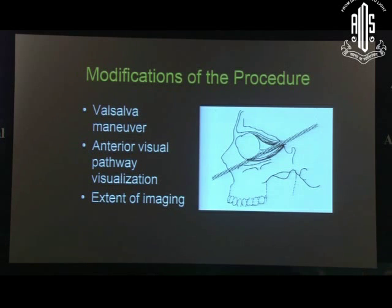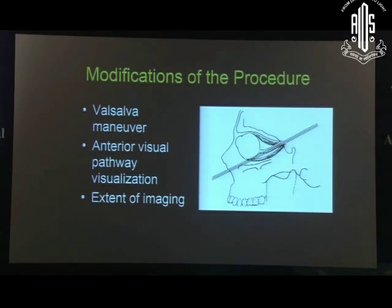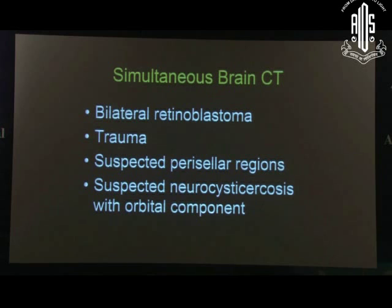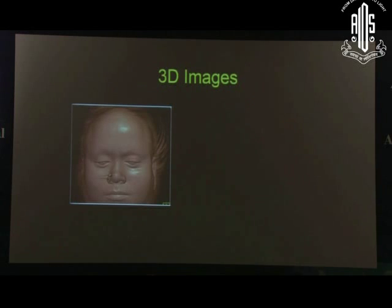If you are suspecting orbital varices, and the patient is lying supine on the gantry, the varices are going to disappear — you will get a negative scan. So you must instruct the patient to perform a Valsalva manoeuvre during the CT scan. And if you want to visualize the entire optic nerve, you must mention it specifically, because when the patient is lying supine the nerve is slightly curved. The angulation should be about 45 degrees. In patients with bilateral retinoblastoma, trauma, suspected pericallar tumours, and neurocysticercosis, you want bilateral brain CT as well.